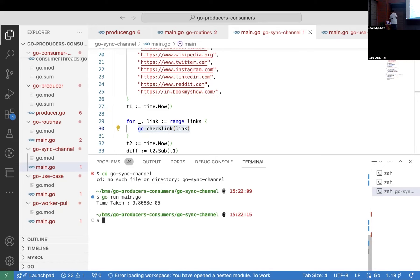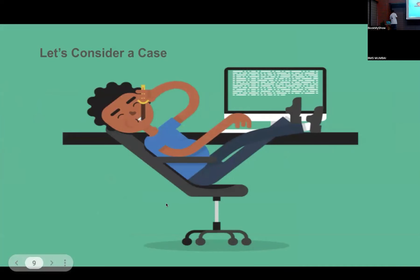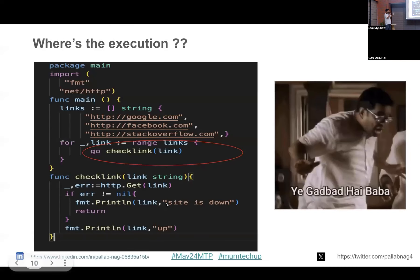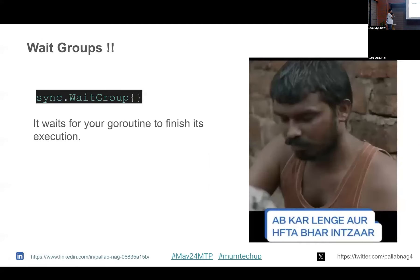Let's understand the problem. We fired the goroutines using the 'go' keyword, but my main thread is not waiting for the child threads to complete execution. To have better control on this, Go has something called WaitGroups. The task of WaitGroups is to basically wait for your goroutines to finish their execution.